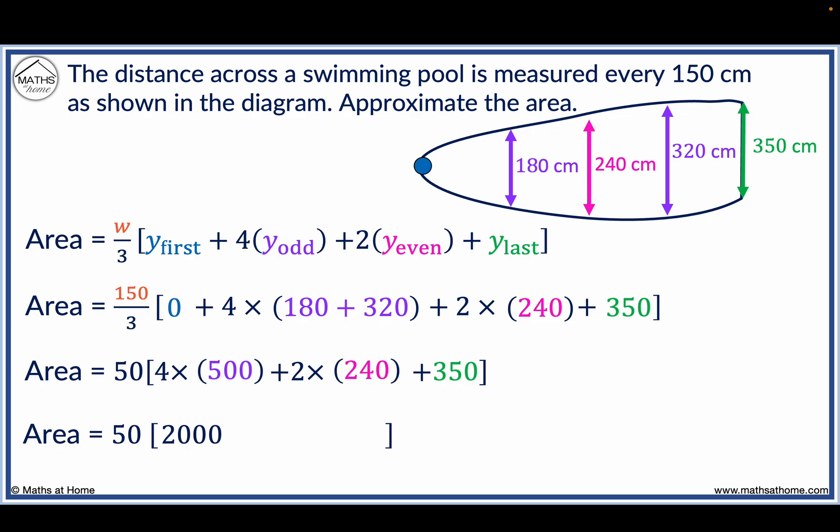And 2 times 240 equals 480. Adding inside the brackets, we get 2830. And 50 times 2830 equals 141,500 centimetres squared.